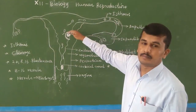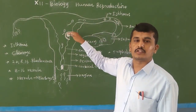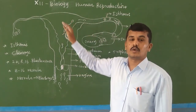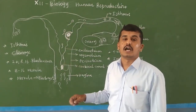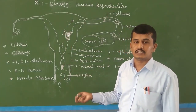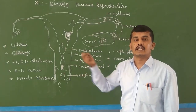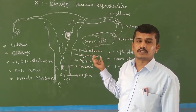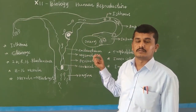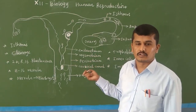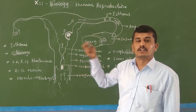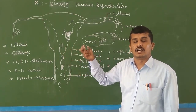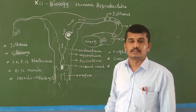This was a general overview of fertilization, embryo development, and how embryos get implanted into the uterine endometrium. The next topics — parturition, further embryo development, and lactation — will be covered in the next class. Please study your NCERT book, practice the drawings, and complete the worksheets given.